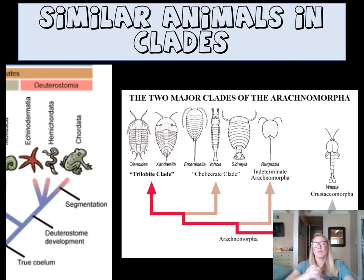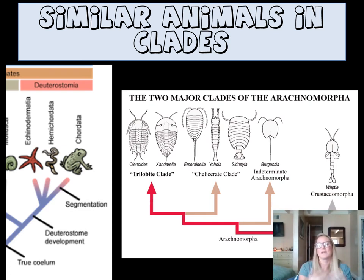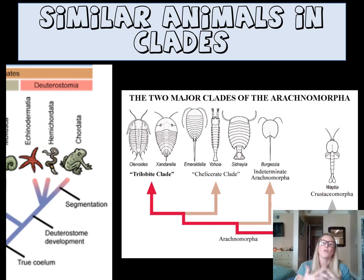The idea behind making cladograms or phylogenetic trees is you take similar organisms and put them together in what are called clades. Things that are similar are closer together on the trees or cladograms. If you take a look at these organisms, the ones that are close together are usually the most similar — that is a key rule to remember.